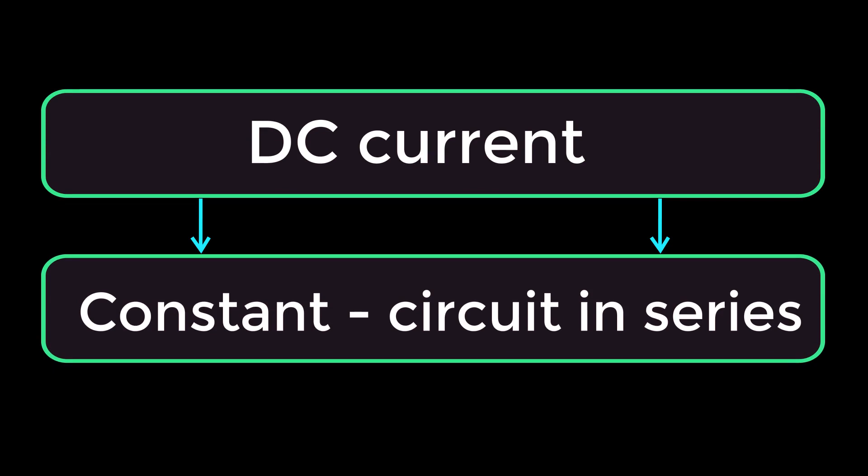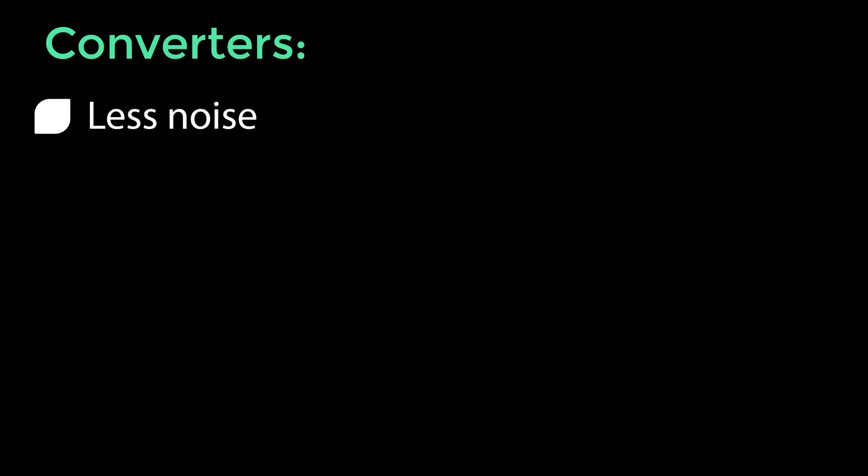The circuits in instrumentation for analog representation of certain physical quantities, DC current is preferred. This is because DC current signals will be constant throughout the circuit in series from the source to the load. The current sensing instruments also have the advantage of less noise.